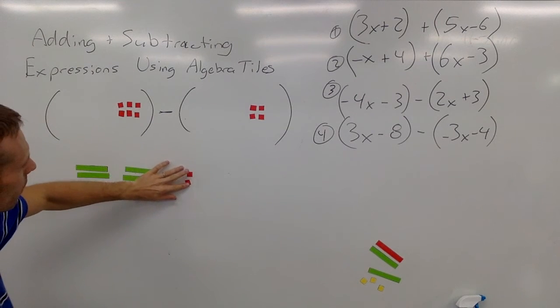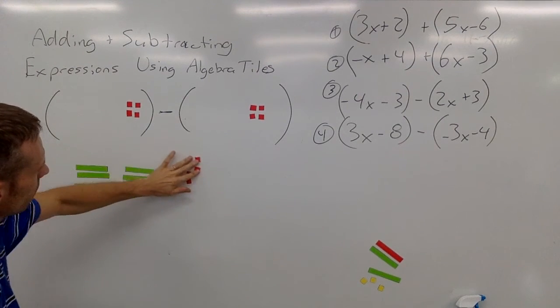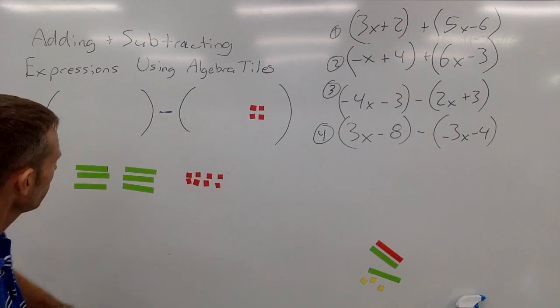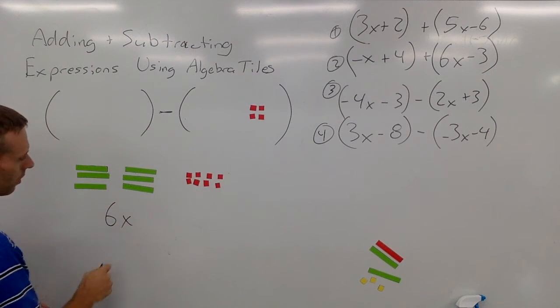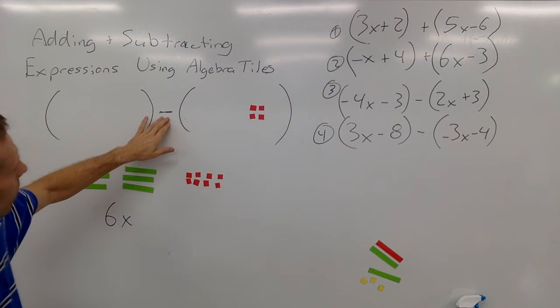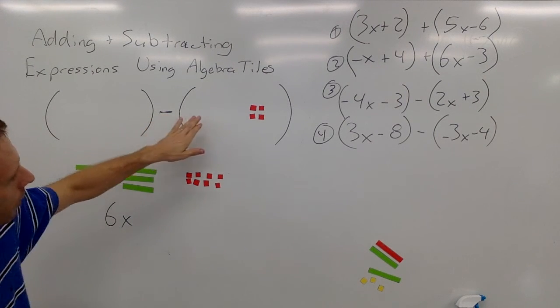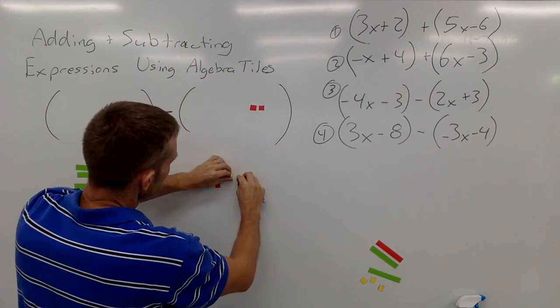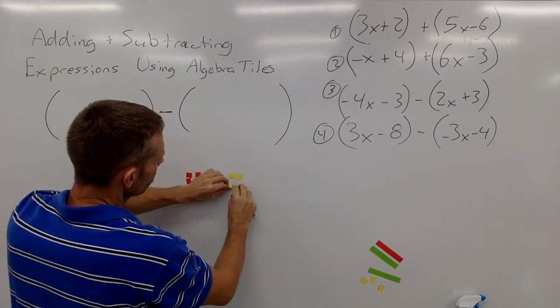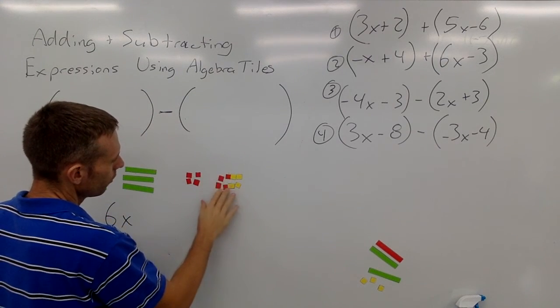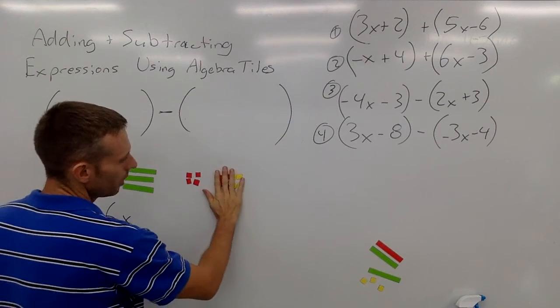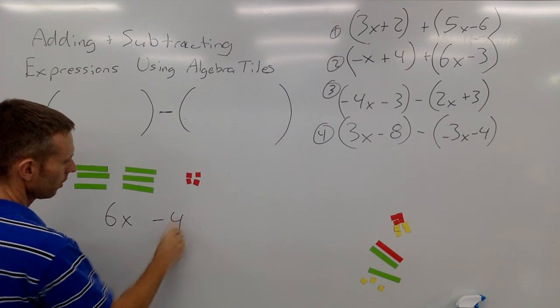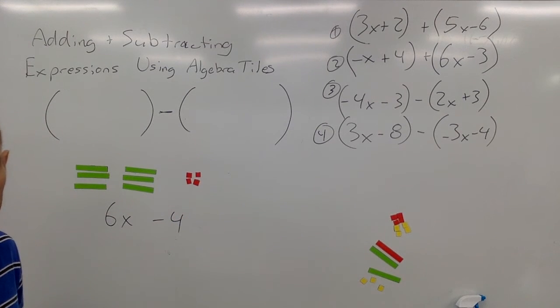Now I have negative 8, negative 4, and then I'm subtracting a negative 4. So that's the same thing as adding a positive 4, and then 4 negatives and 4 positives cancel each other out. And I'm left with negative 4.